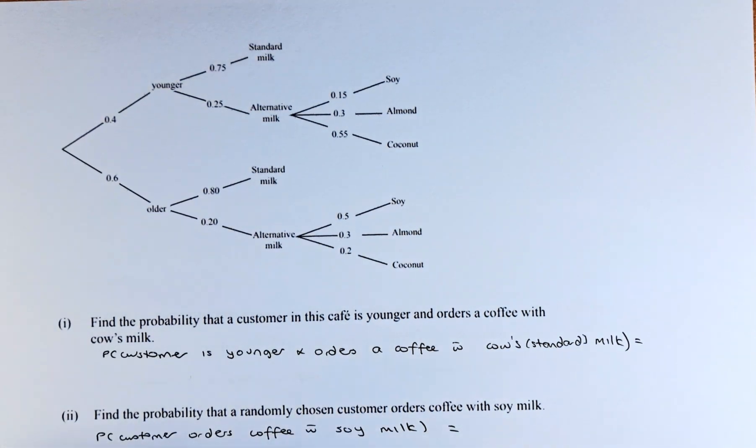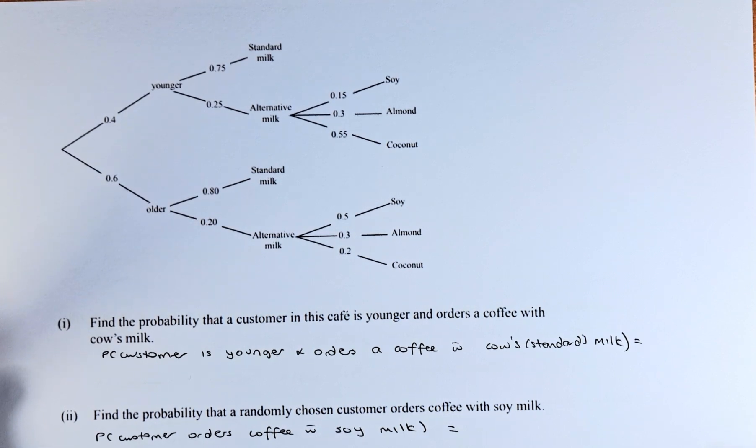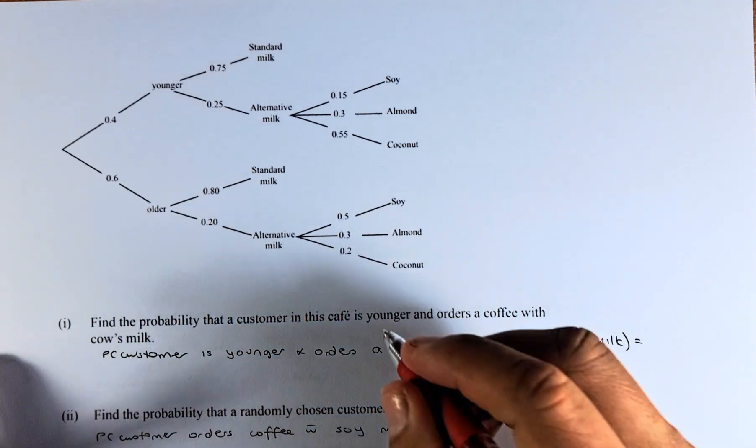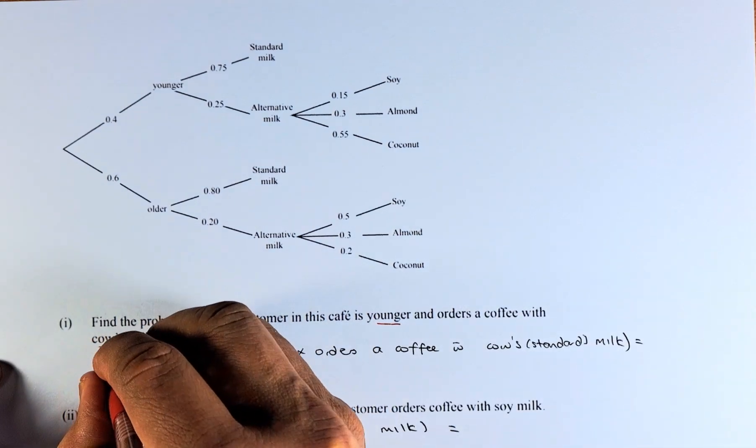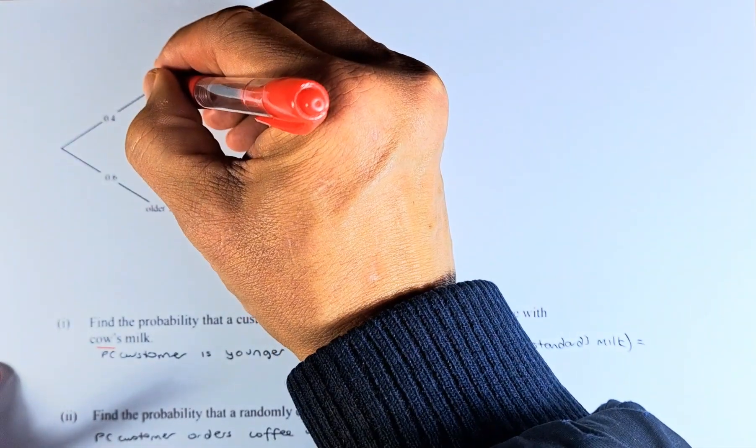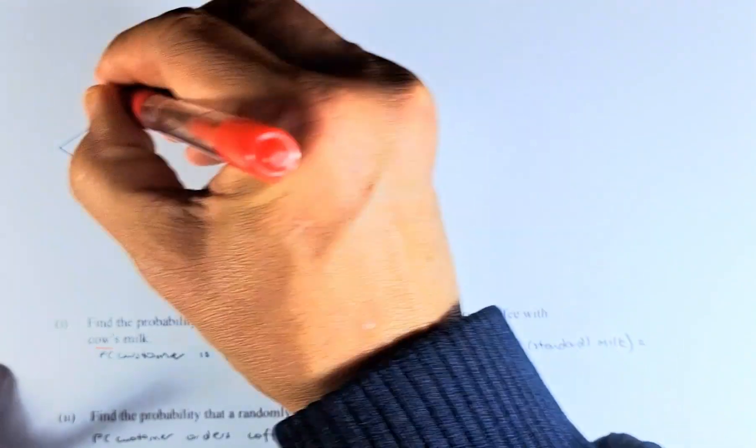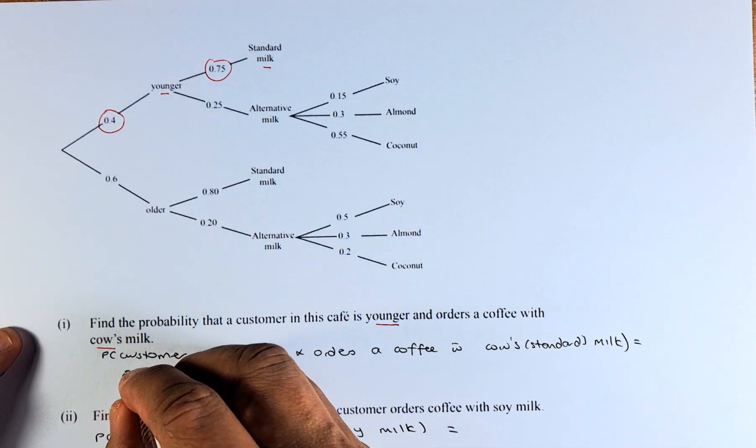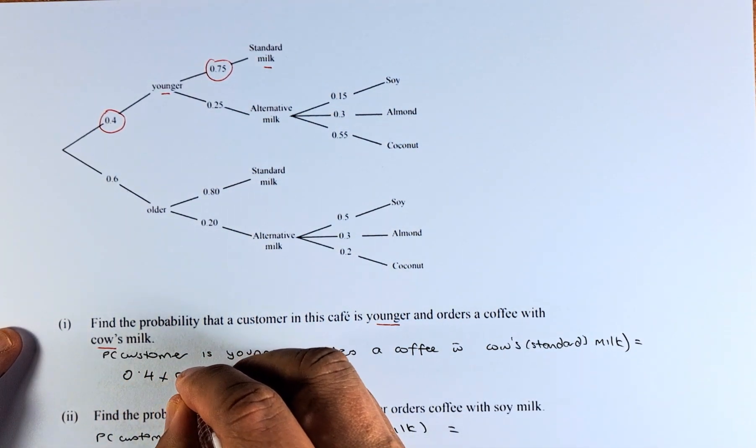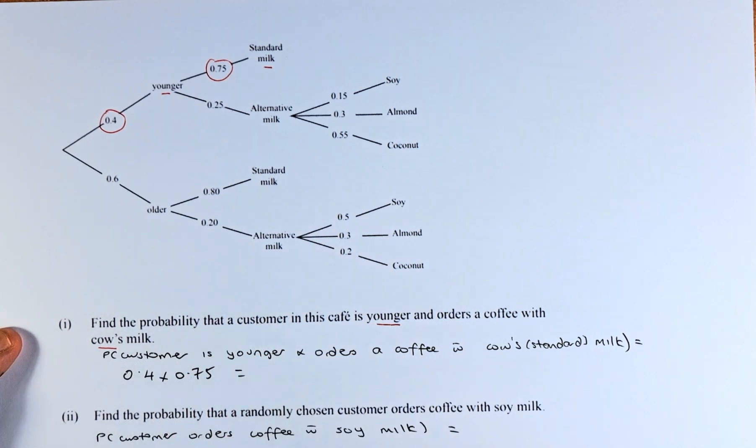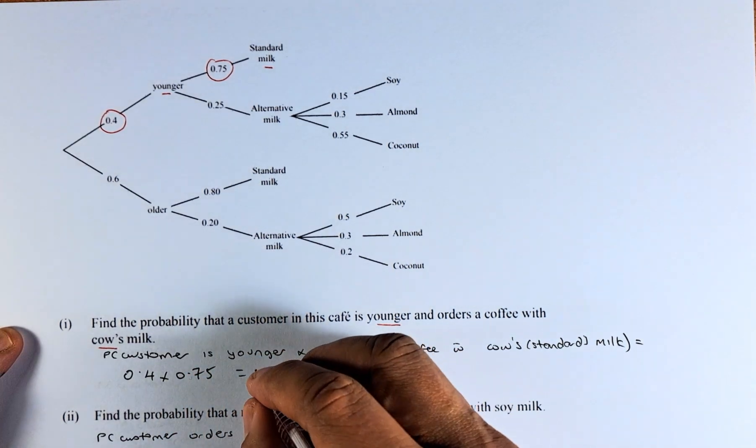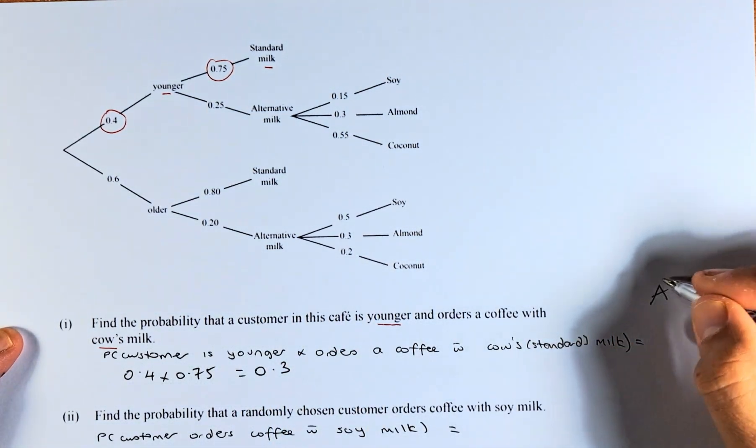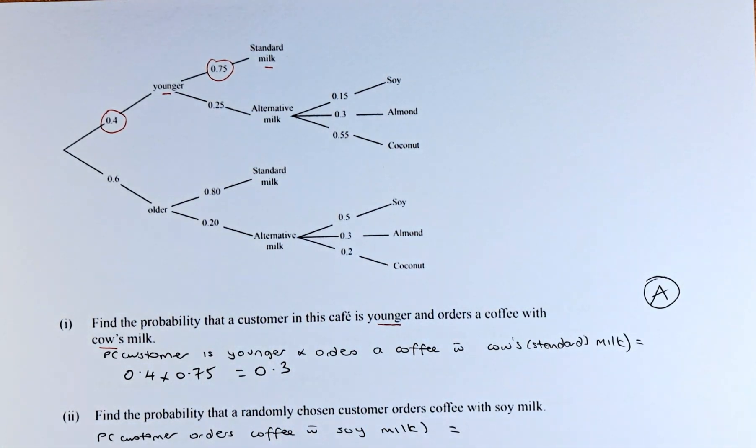The question part 1 is that, find the probability that the customer in his cafe is younger and orders coffee with a cow's milk. Cow's milk, as I said, is standard milk. So it's younger and standard milk. So you just take this number and multiply them together. So it's going to be 0.4 multiplied by 0.75. Put it in your calculator and the answer is 0.3, and that is an easy one.